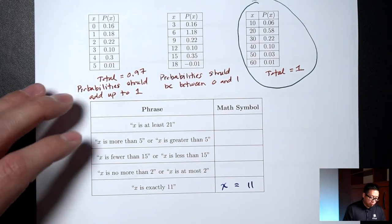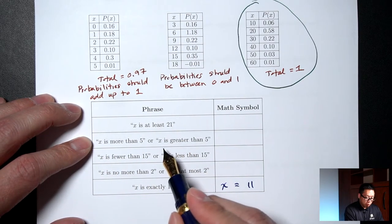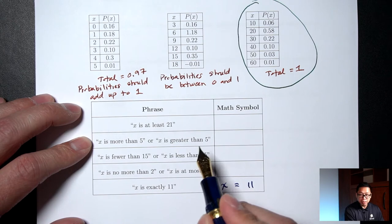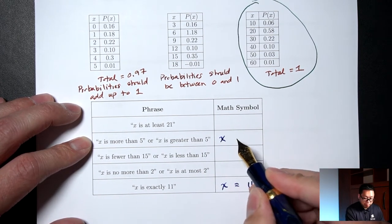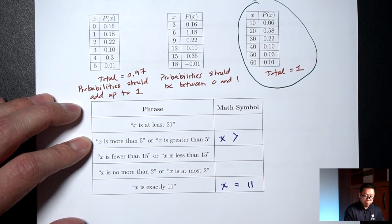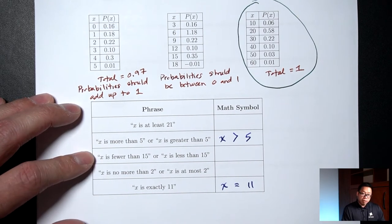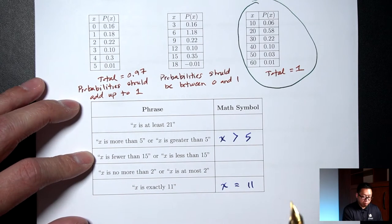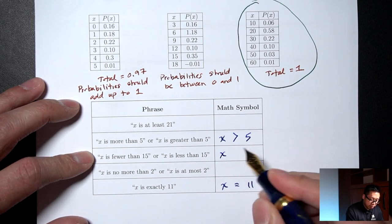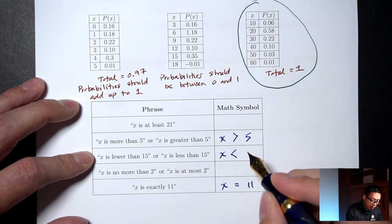'X is more than 5,' or 'X is greater than 5,' translates to X > 5. 'X is fewer than 15,' or 'X is less than 15,' translates to X < 15.